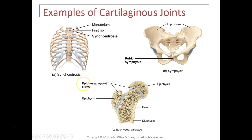We have two examples of synchondroses. Synchondroses are cartilaginous joints where the adjoining bones are held together by hyaline cartilage. The example depicted is the first rib adjoining to the manubrium of the sternum — called the sternocostal joint. The first sternocostal joint is a synchondrosis, and this particular joint is a synarthrotic joint — it allows no movement.